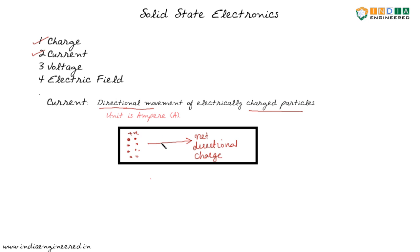There is a current in this material, and the direction of current — because it is due to positive charges — is along this direction. We will see more about the direction of current later. Now let us see what is the unit of current. The unit of current is ampere.